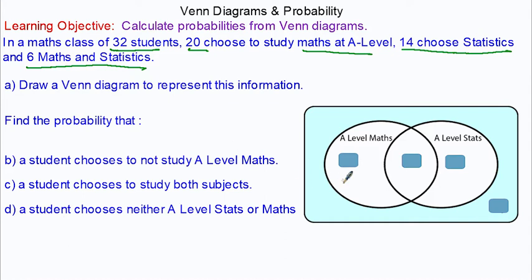So we're going to draw the Venn diagram and we're going to look first at the intersection, which is the region that is true for both. It tells you that six students choose both, so that will be six.